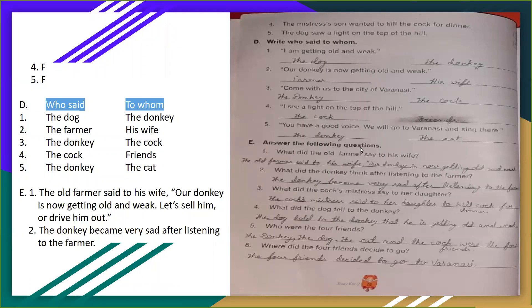E, answer the following questions. First, what did the old farmer say to his wife? The old farmer said to his wife, our donkey is now getting old and weak. Let's sell him or drive him out.